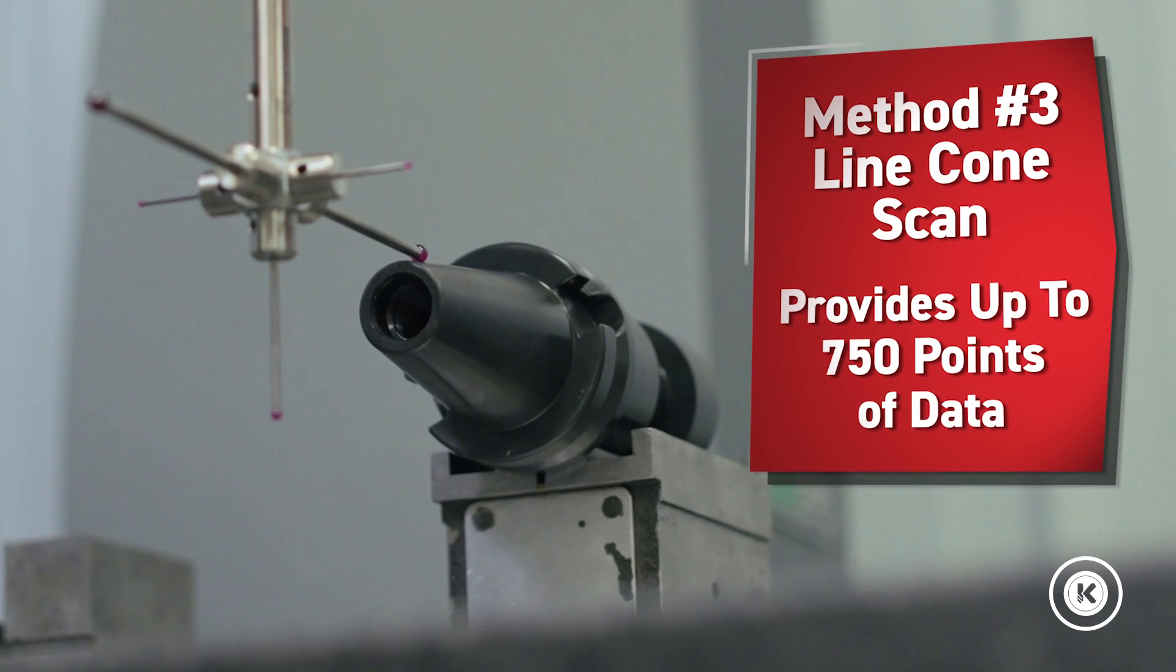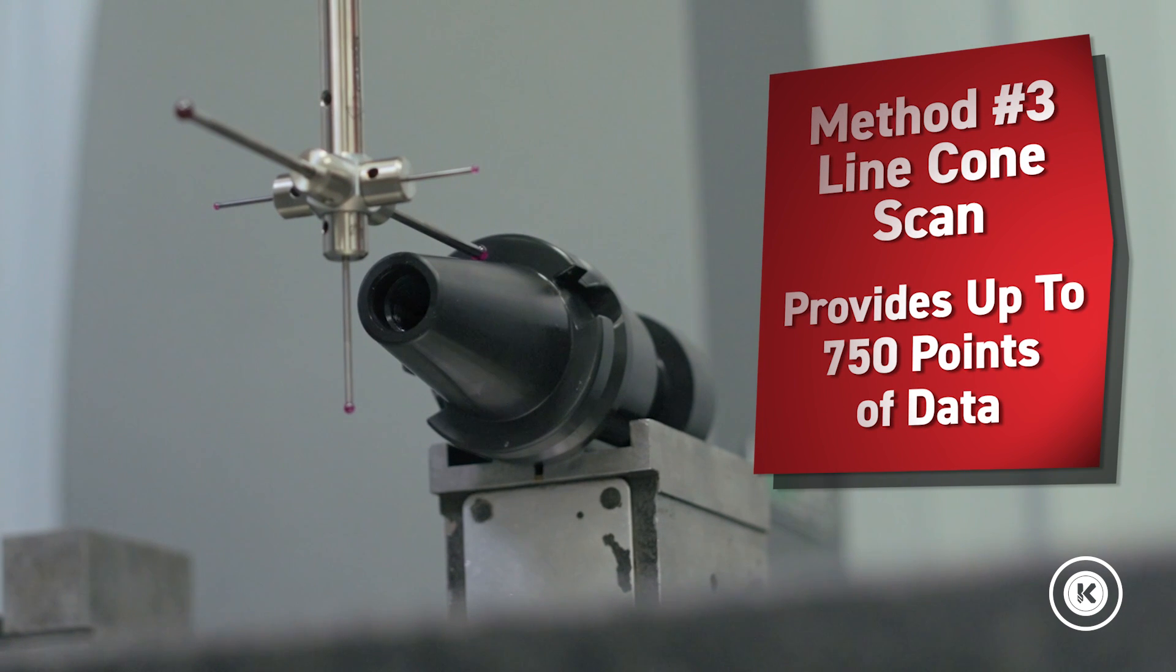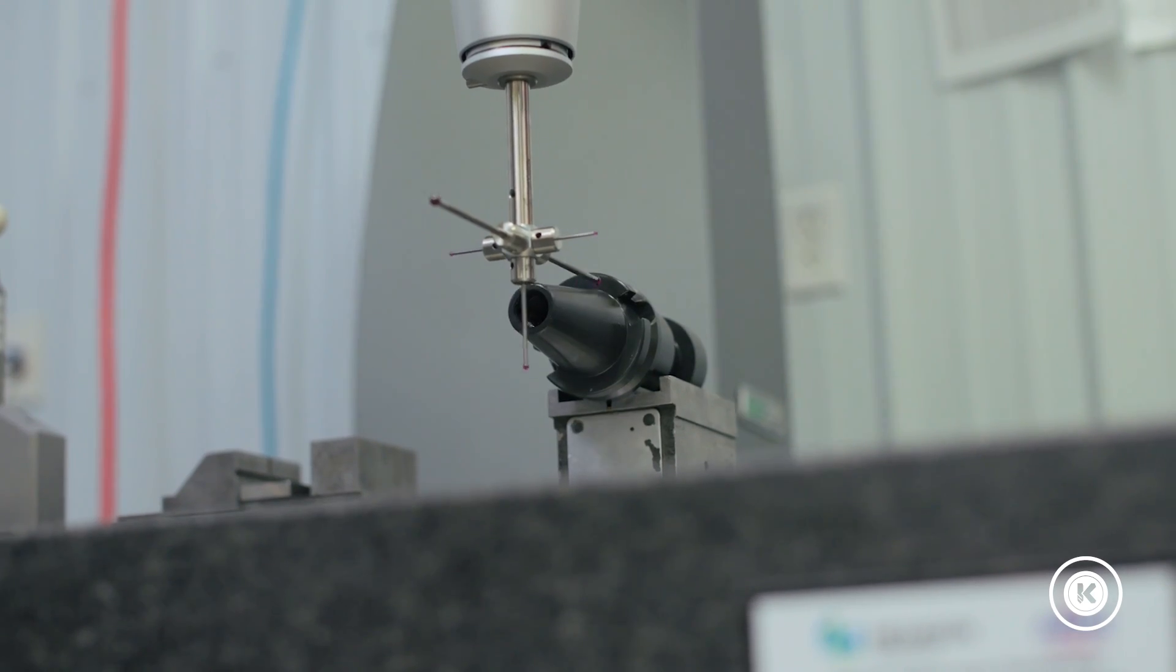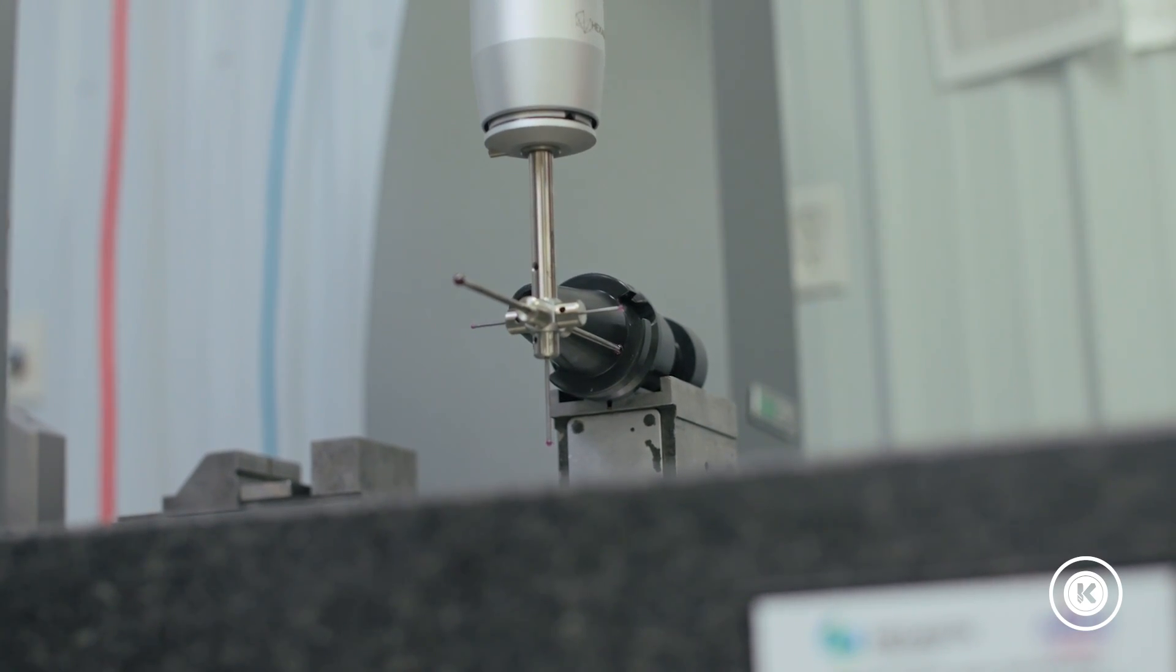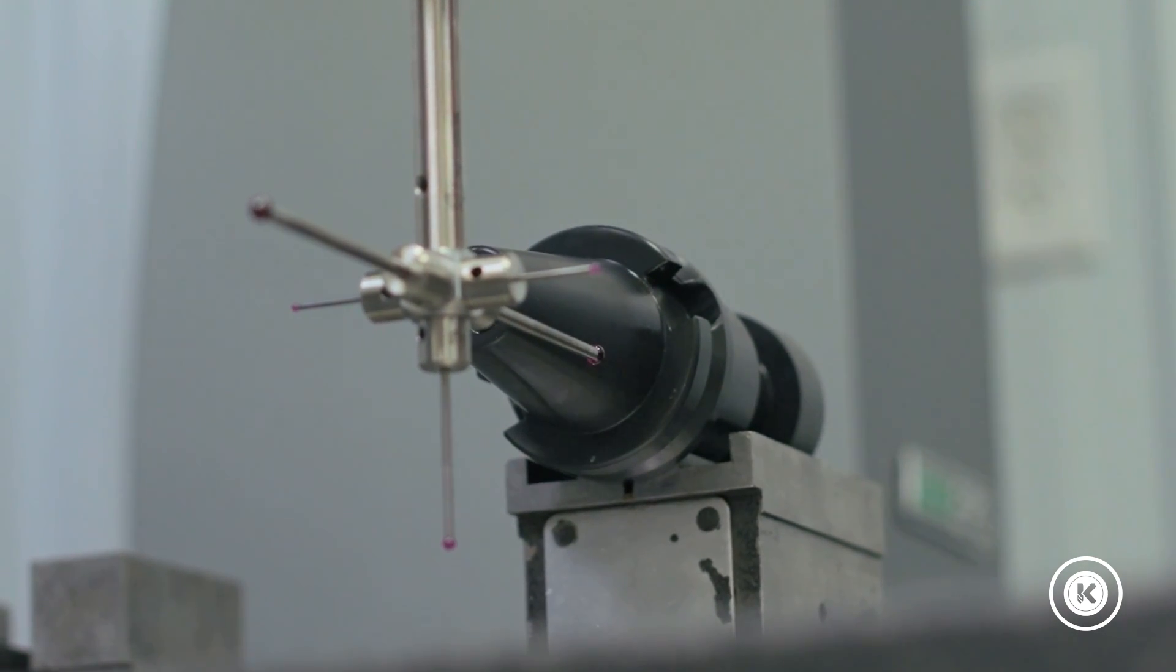And our third way is going to be a line cone scan. So what the stylus is going to do is the stylus is going to touch the part and scan up the length of the cone. This method will get about 750 points of data to get a lot more accuracy off of our measurements.